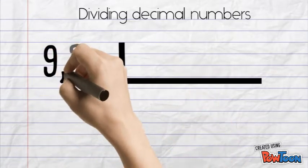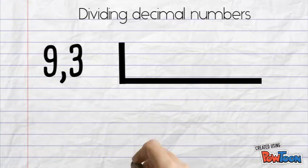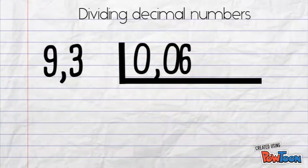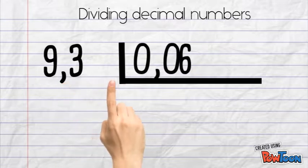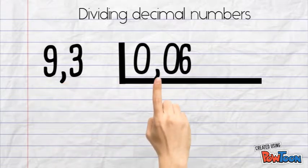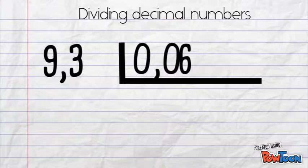Let's take 9.3 divided by 0.06. First, we need to transform this relation into two whole numbers, or in other words, get rid of the decimals. To do so we'll have to multiply both of them by the same number.